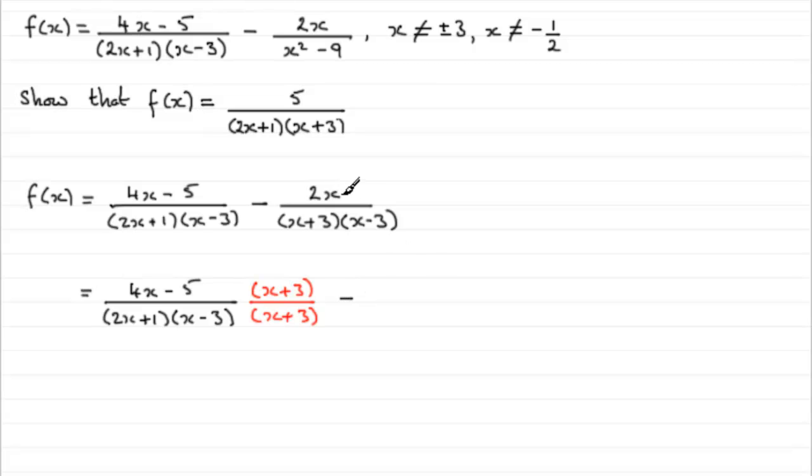Then we've got the minus here. We'll take the next fraction 2x over x plus 3, x minus 3. But for this to share the same denominator as this 2x plus 1, x minus 3, x plus 3, you can see that we're missing the 2x plus 1. So I can multiply top and bottom here by 2x plus 1 so it's like multiplying by 1 again. So it's not going to alter the value but just the appearance of the fraction.